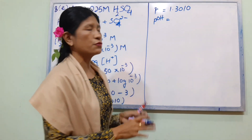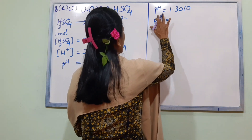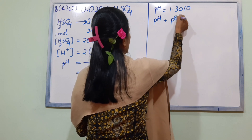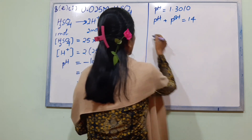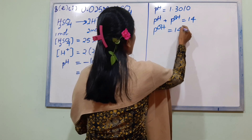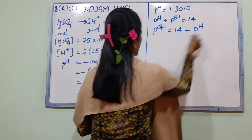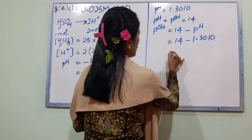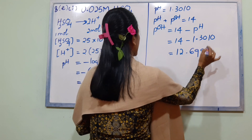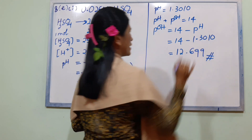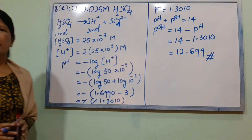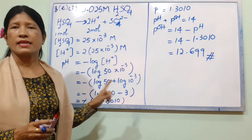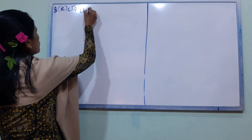Using the relation pH + pOH = 14, with pH ≈ 1.3010, we get pOH = 14 − 1.3010 = 12.699. The pH of the solution is approximately 1.301.